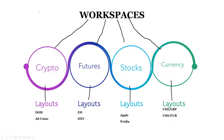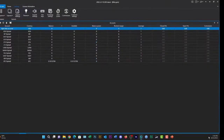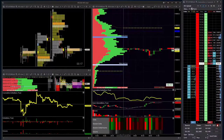Inside Attis you can have as many workspaces as you want. For example, you could have one for crypto, one for futures, one for stocks, one for currency. Under each workspace you can have as many layouts as you want. You could have just one workspace with everything in it — all your crypto, futures, stocks, and forex — all as layouts under one big workspace.